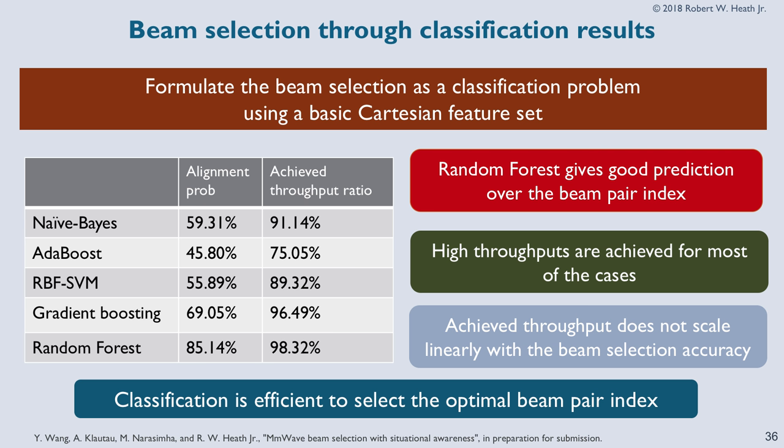Interestingly, the Bayes approach — which didn't pick the correct beam all that often — actually had a higher rate than some other approaches that picked the beam more accurately. The alignment probability is not necessarily a proxy for average rate, because the question is: if you don't pick the best beam, what beam do you end up picking? If you end up picking a beam that has a higher rate anyway, that's fine even though you were misaligned. Some approaches result in suggested beams that end up having higher rate even though they're not actually the correct one — and I'm still trying to wrap my head around how to deal with that.